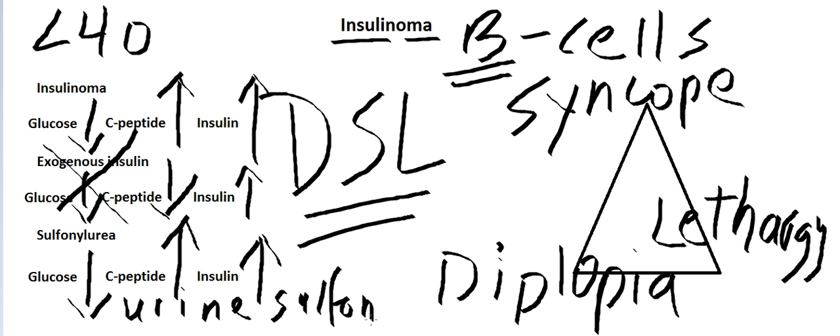So what that means is you're going to check the sulfonylurea level in the urine because it metabolizes. And then you're going to do a couple of tests. As you all know, insulinoma, and I talked about gastrinoma and other tumors, is that they're neuroendocrine tumors.